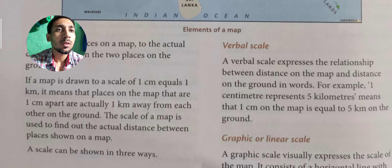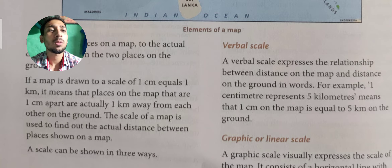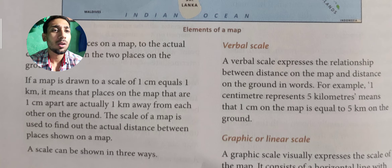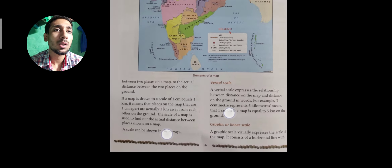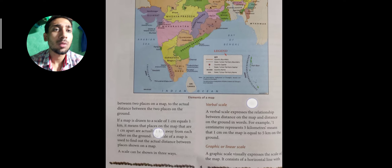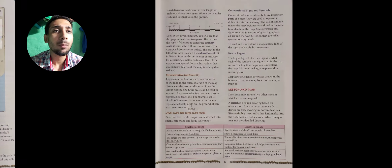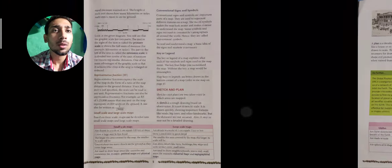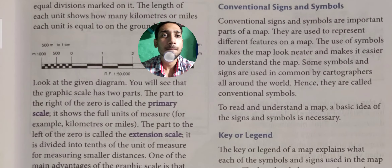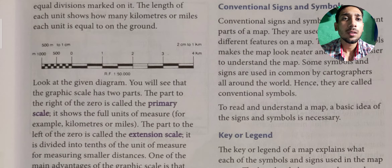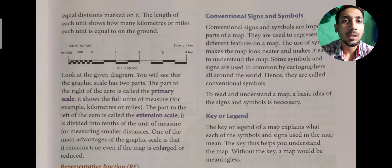Scale has three forms: verbal scale, graphical (linear) scale, and representative fraction. Verbal scale simply states, for example, 'one centimeter represents five kilometers.' Graphical or linear scale shows a horizontal line with proper scaling on the map, as you can see in the diagram — that type of scaling on the map is called a graphical scale.